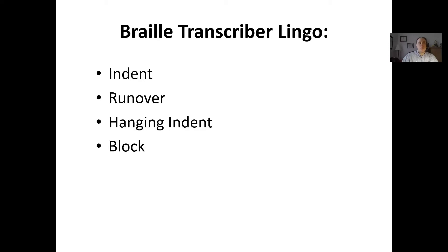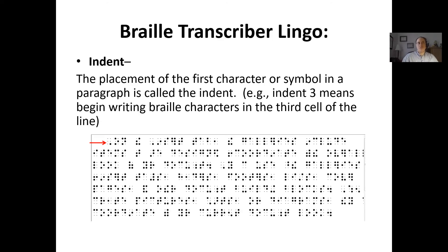Braille transcriber lingo is really important, and something often left out of courses when you're learning braille. As you start to transcribe documents for your students, it helps to know a little of this lingo to use the software programs you'll be using. 'Indent' is pretty straightforward — it determines the first placement of a character in a paragraph. So 'indent to three' means you start writing in the third cell of the braille line — you skip two spaces and start writing in that third cell. A standard paragraph indent would be indent to three.